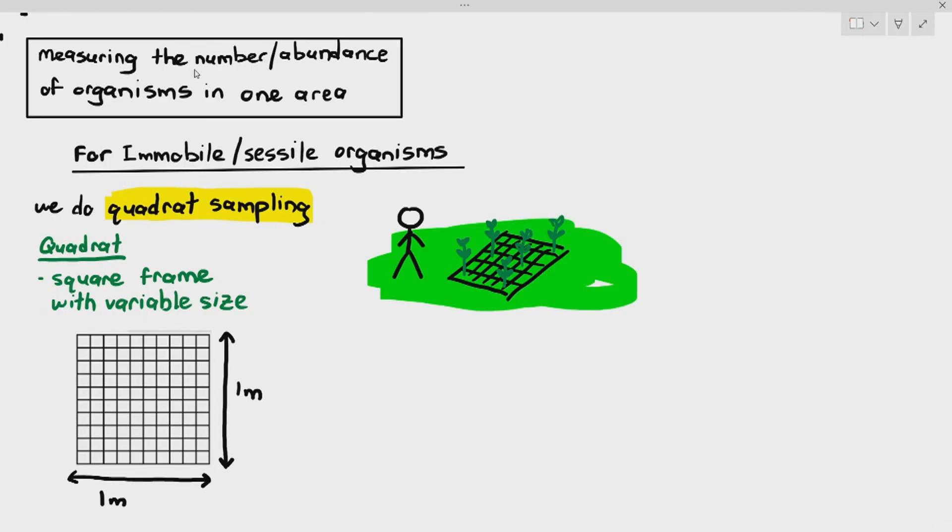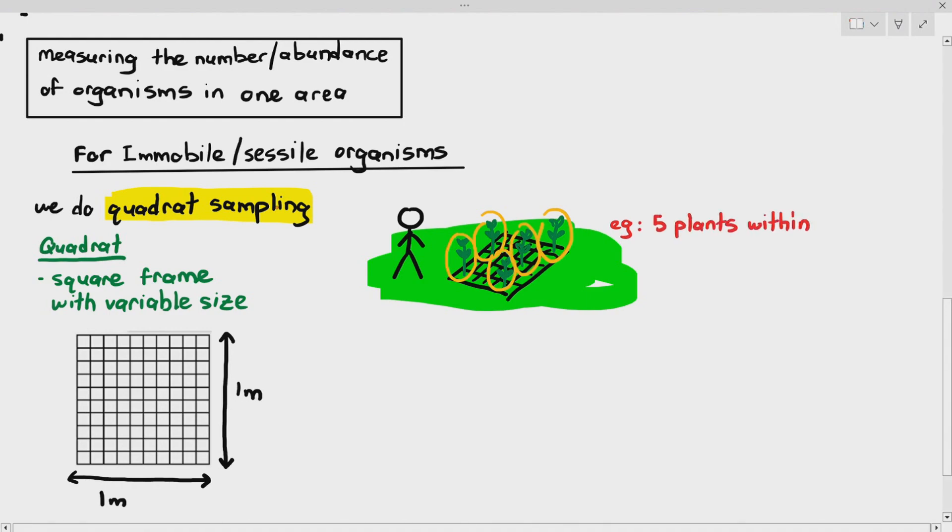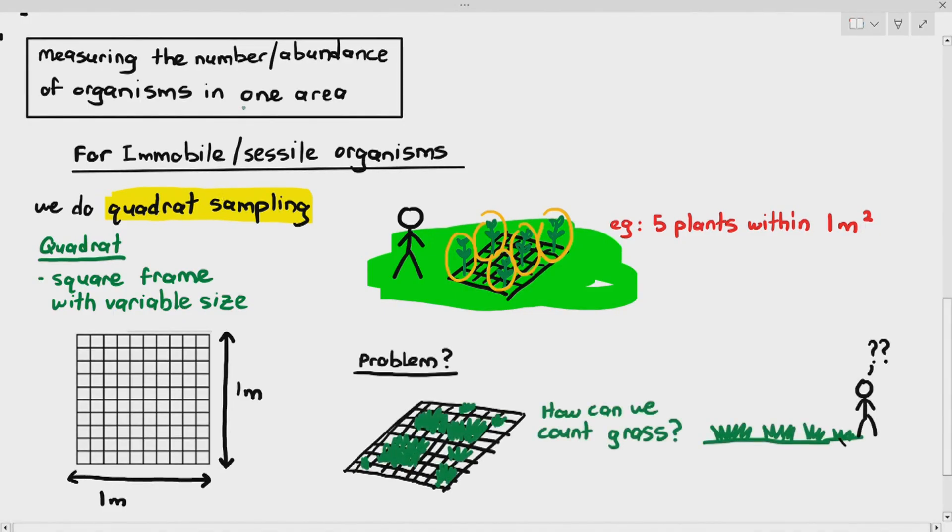So what you do is very simple. You just put the quadrat on the field. And then if there are any plants within the quadrat, you count it. So if you count the number of plants within this quadrat, 1, 2, 3, 4, 5, there are 5 plants within 1 meter square. Very simple. However, it does have its set of problems.